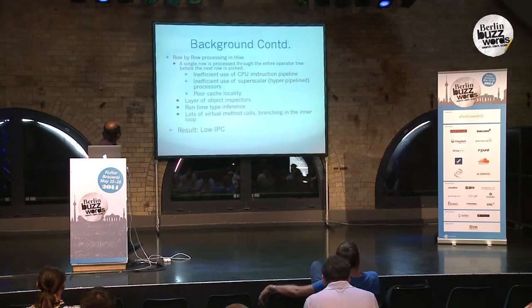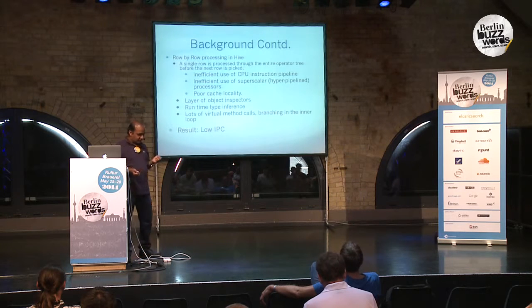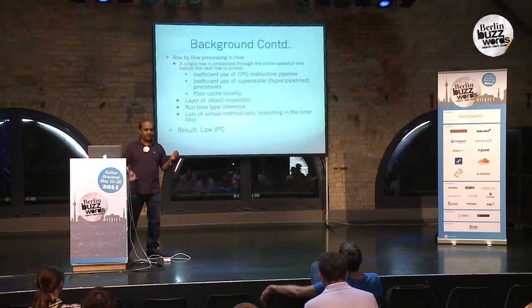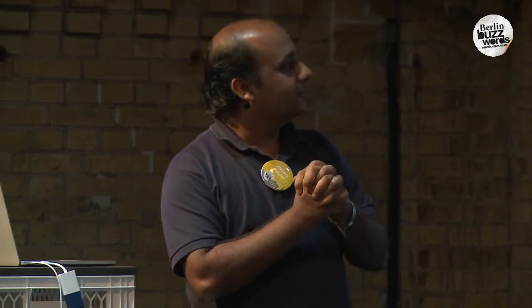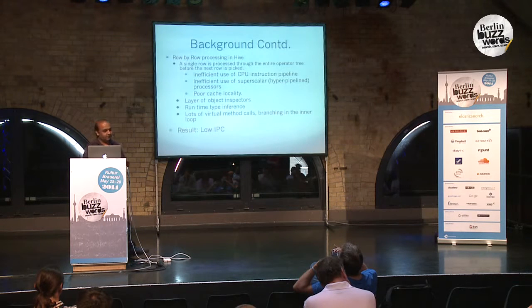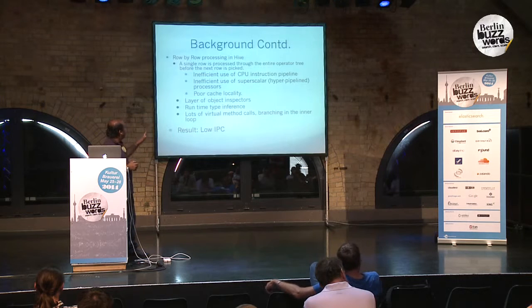There are certain particular things about Hive — it had this layer of object inspectors. The idea was to support any possible data format by encapsulating data into an object inspector, and at runtime the inspector would inspect the data and do the deserialization. These object inspectors were introduced for lazy deserialization, and type inference was also done at runtime. All these things are great for flexibility but not for performance. The initial implementation had ignored avoiding things that are slow for a CPU, for example branching or indirect branching in terms of virtual method calls. The result of all this was a low instruction-per-cycle count — and that is the key thing we are trying to address in this work.